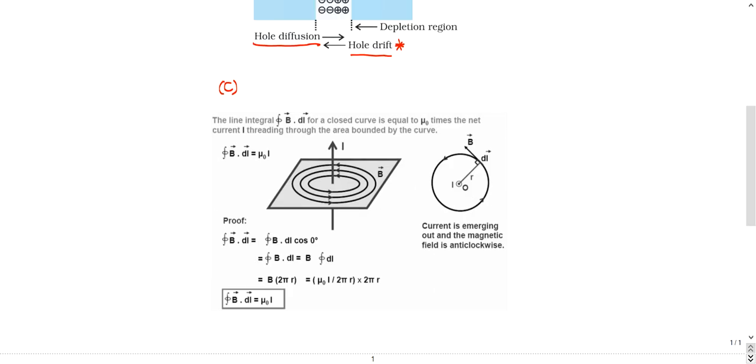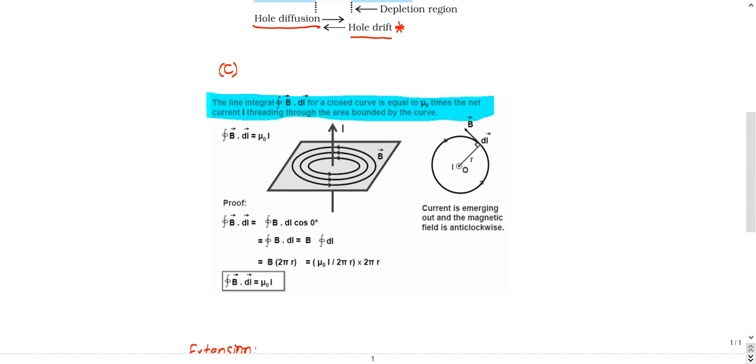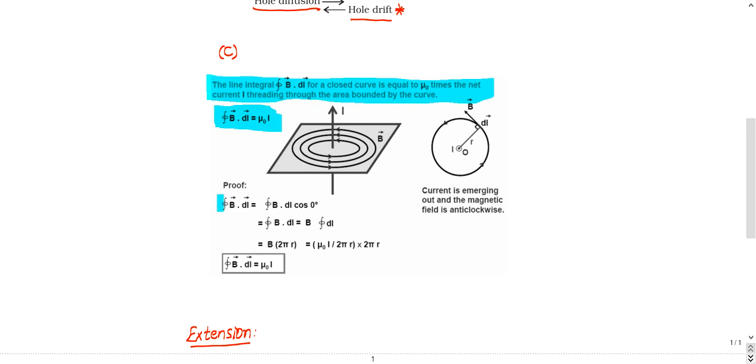You can see here. The line integral of B·DL over a closed path is equal to mu naught times the net current threading through the area bounded by the curve. This is a simple way - I will explain you this. What we need to prove is the line integral over a closed path of B·DL is equal to mu naught into I, some constant times the total current enclosed by that curve. Let us consider the left hand side B dot DL line integral. What is dot product? A dot B cos theta. Similarly B dot DL cos theta. The angle between B and DL, they are in the same direction. You can look at this figure. DL and B, they are moving in the same way. So then the angle between them is 0, so it becomes B·DL simple.